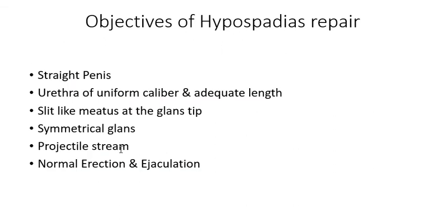Objectives of hypospadias repair: the penis should be straight; the neo-urethra should be of uniform caliber and adequate length; the external meatus should be slit-like; the glans should be symmetrical; the urinary stream should be projectile; and erection and ejaculation should be normal.